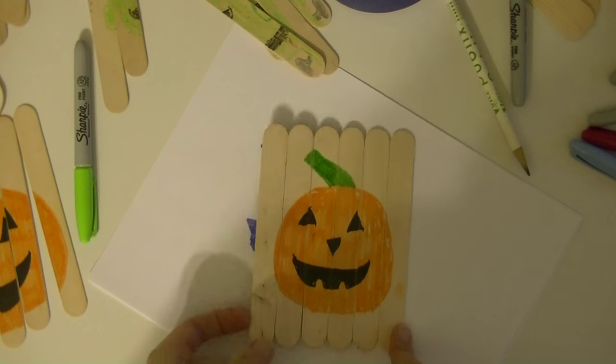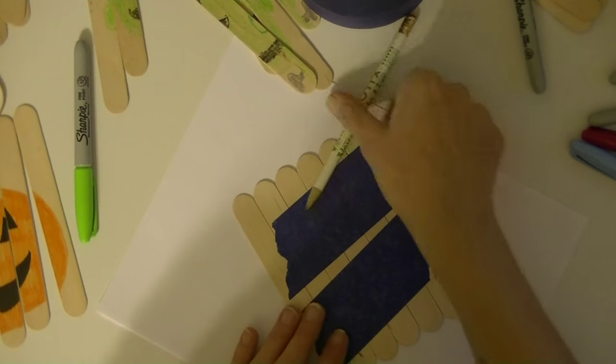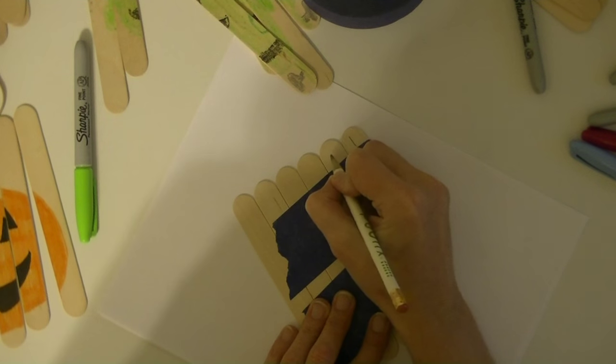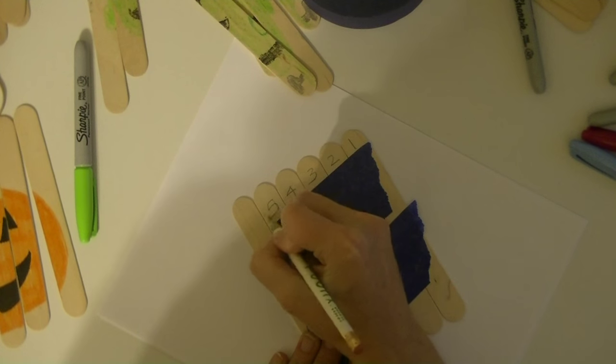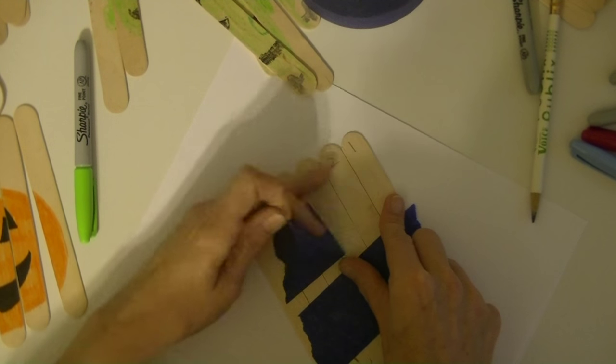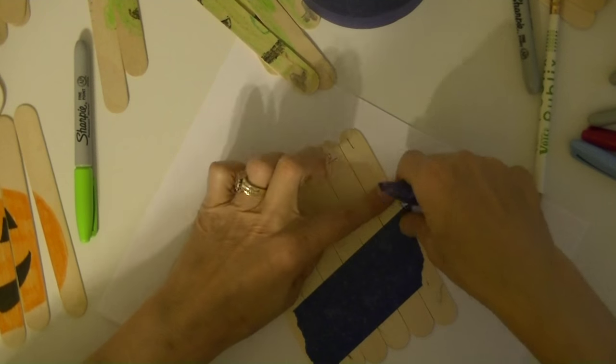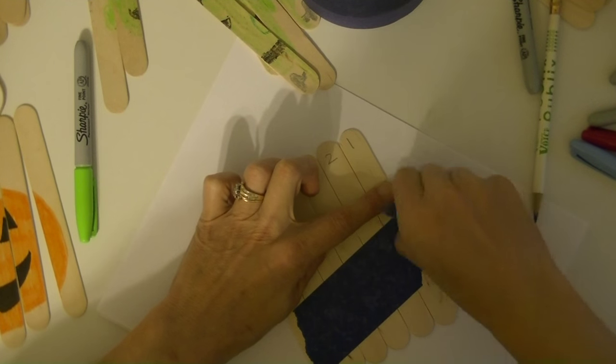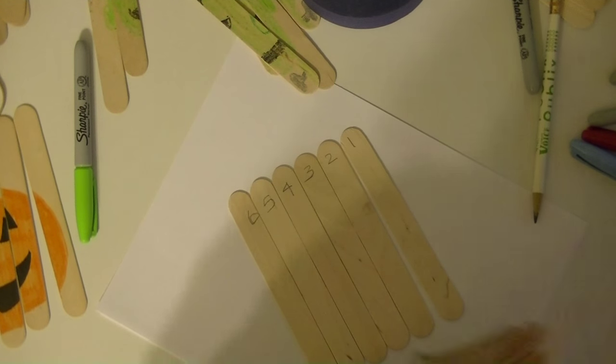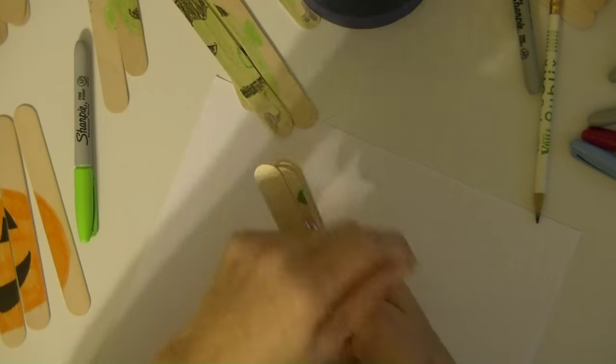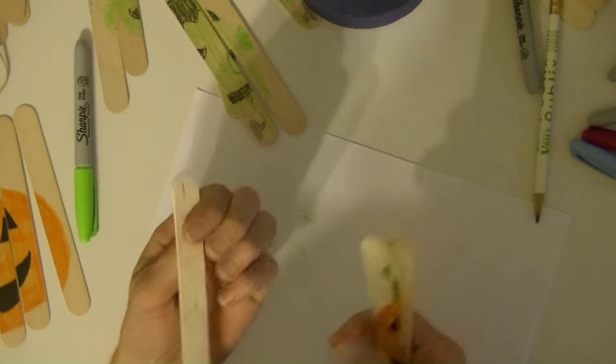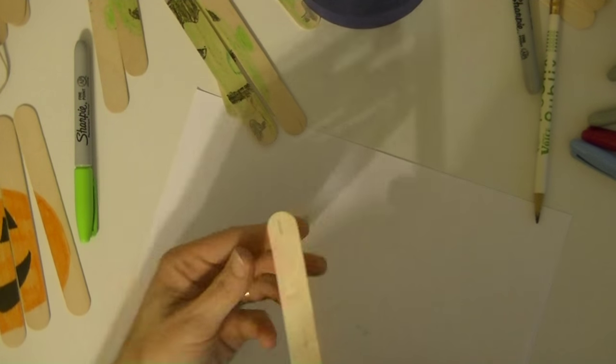All right, so we have our pumpkin done. Flip it over. I'm going to number them one through six. Okay, take the tape. And then you can just kind of go like that, put them in a little rubber band and have little ones put them together. It's going to put this one together. There's number one, two, three, four, five, six.